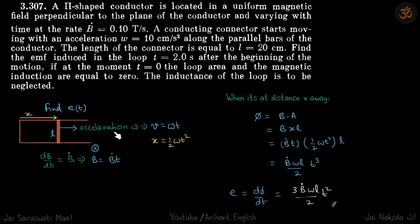Few things we can say: if the acceleration is ω and it starts from here, that means the distance travelled X is half ωt squared and velocity will be ωt.